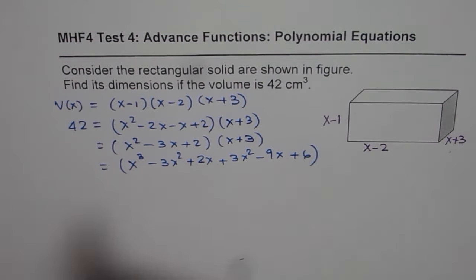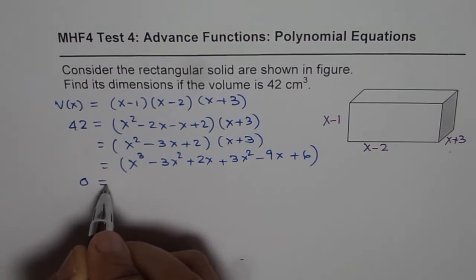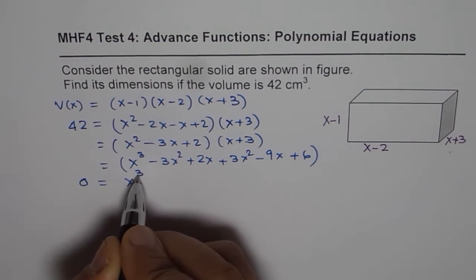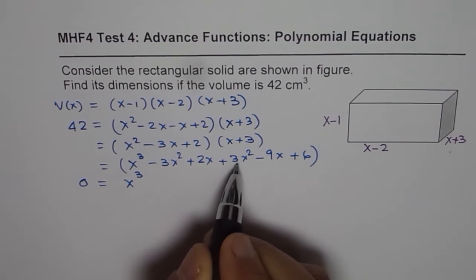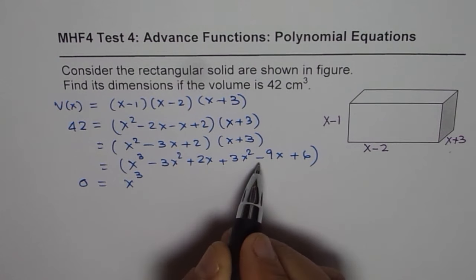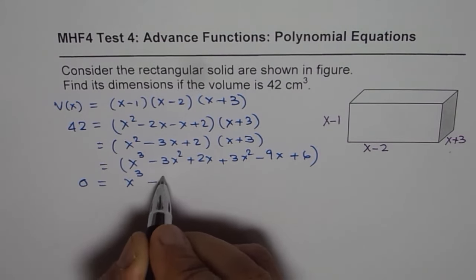Now we can bring 42 to the right side, simplify the polynomial which is x³ minus 3x² plus 3x² is 0, 2x minus 9x will give us minus 7x.